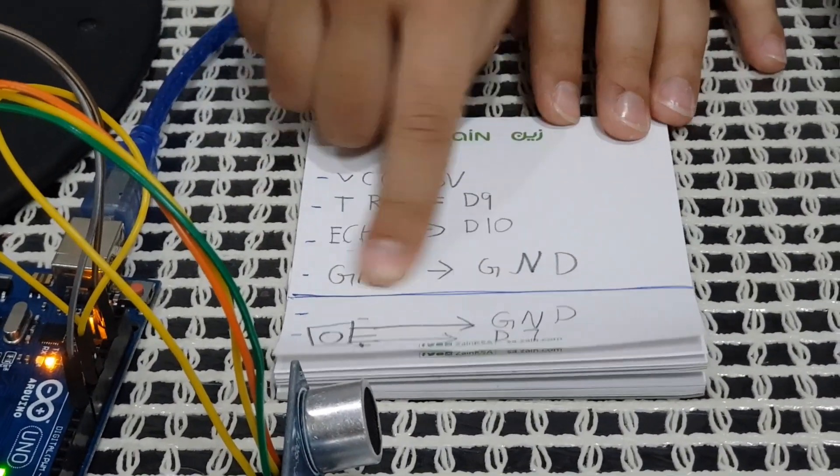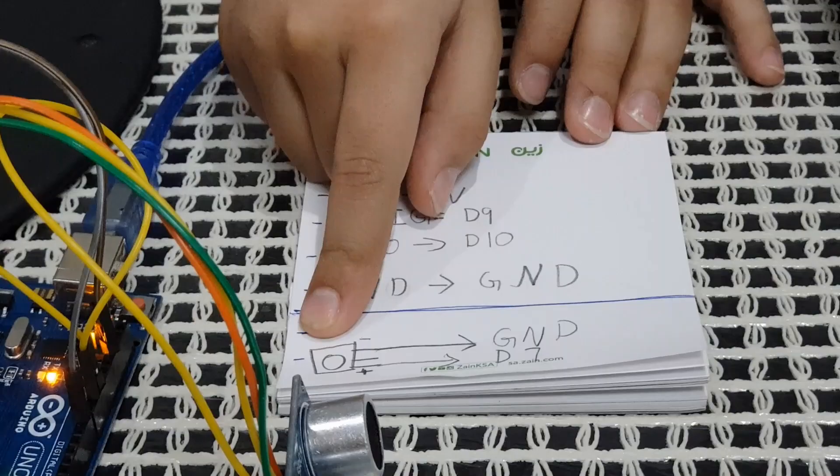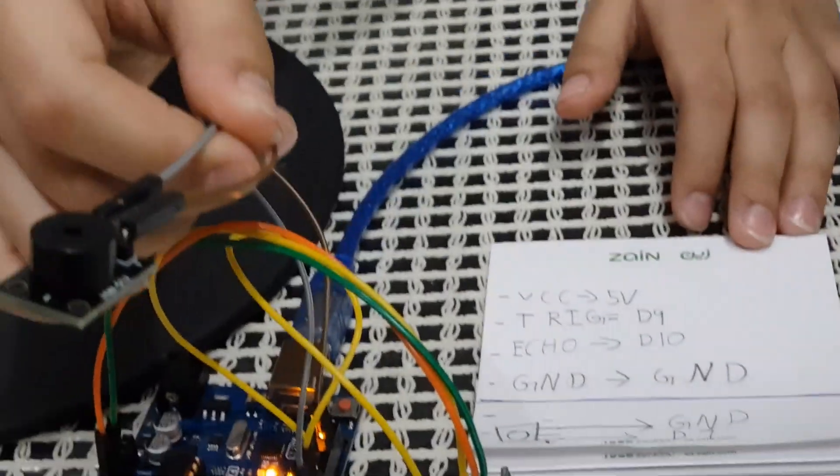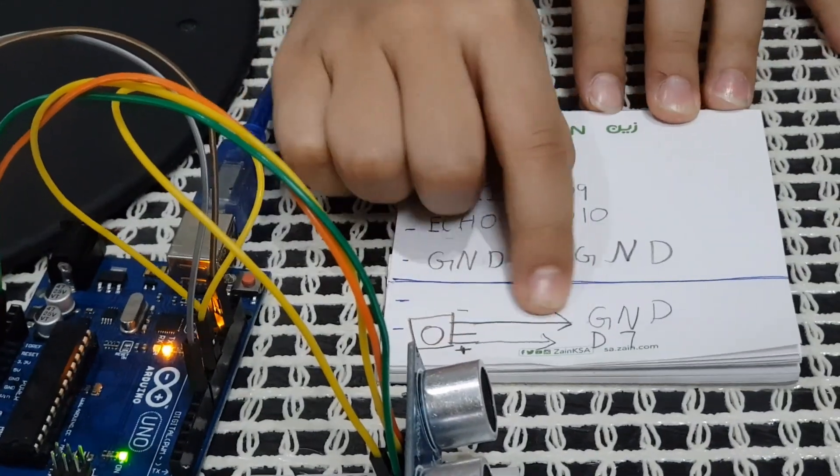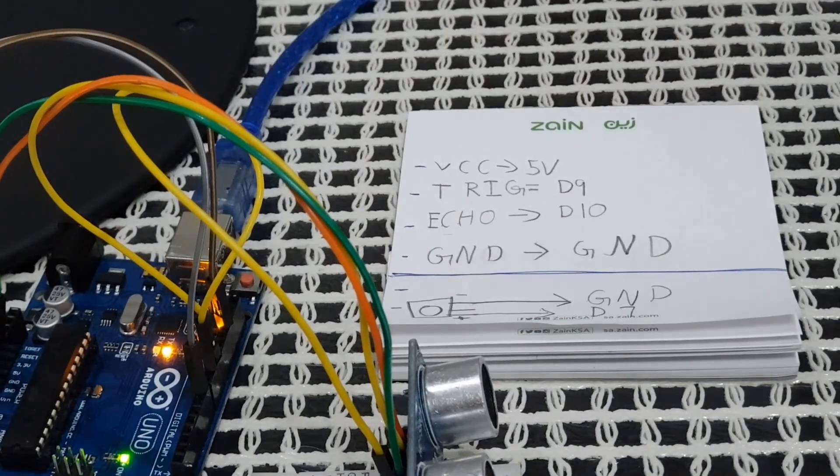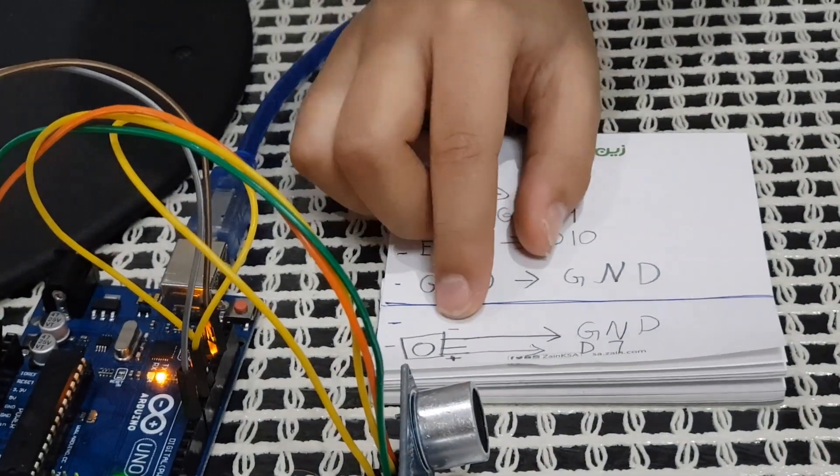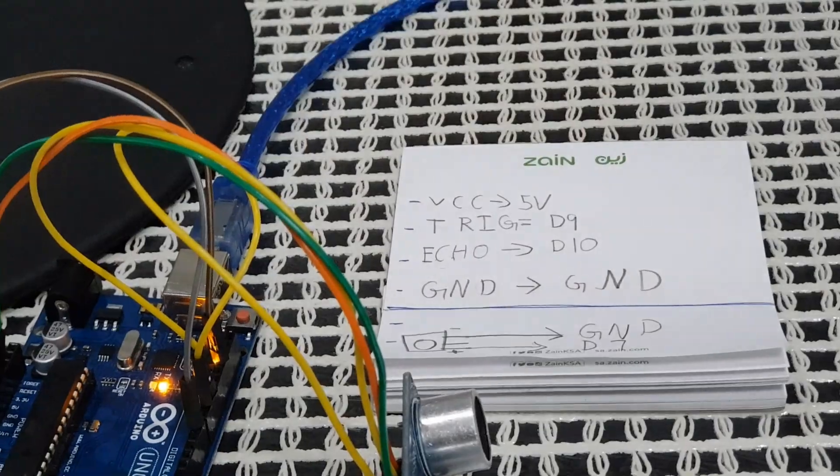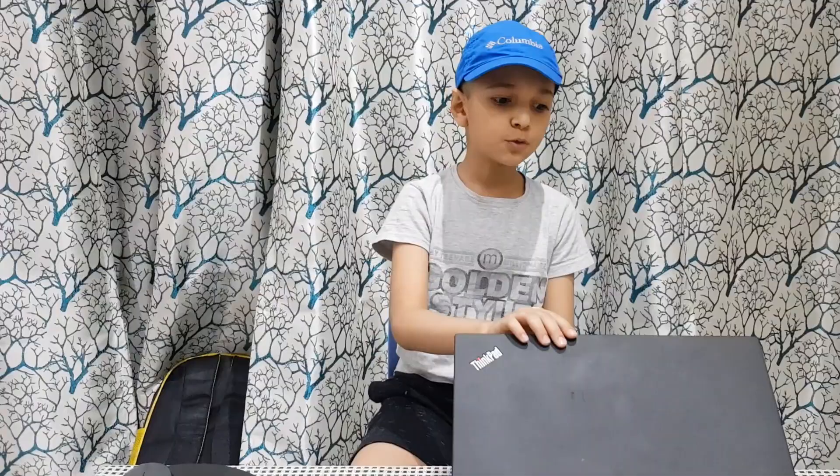And then these are the connections of the buzzer. So I have a 3-pin buzzer. So the buzzer's plus goes to digital 7. That also we have to declare in our code. And then the ground goes to ground. So those are all the connections. Now I will show you the code.